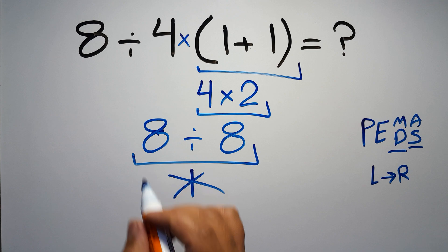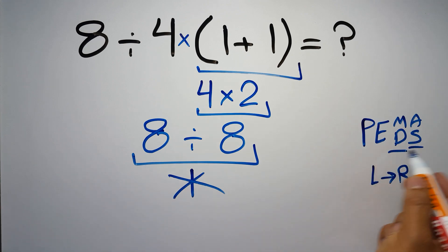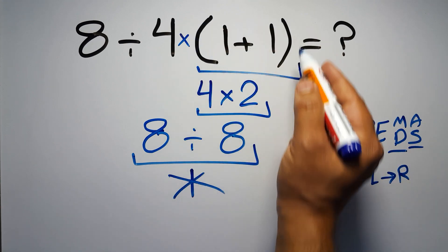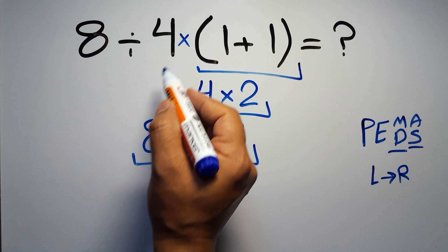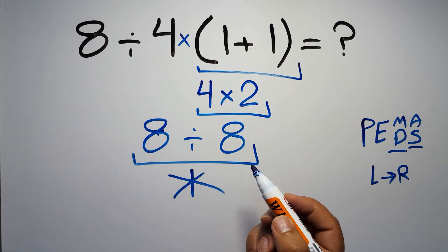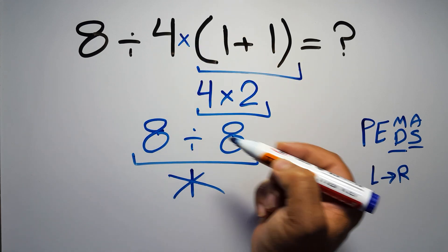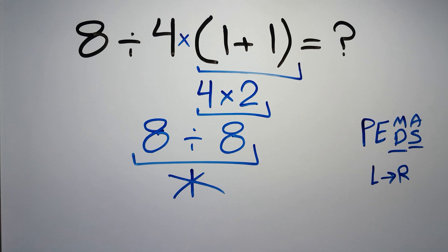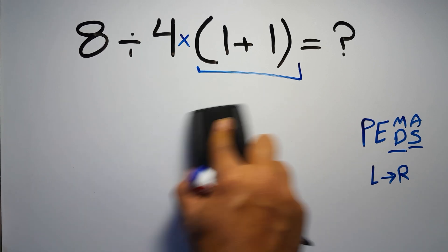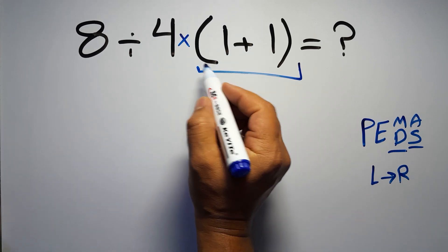Okay, so according to PEMDAS, first we have to do this parentheses, then this division, and finally this multiplication. If we do this multiplication before this division, it is wrong. So first, this parentheses.